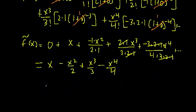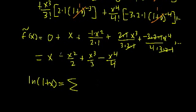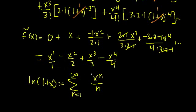We can rewrite this in series notation, but we have to be slightly careful. We have x to the n over n, since both the exponent and denominator increase by 1 each term. However, we can't start at n equals 0 — we start at n equals 1. So the sum runs from n equals 1 to infinity of x to the n over n. We also include the alternating sign factor: times negative 1 to the n plus 1. When n equals 1, that gives negative 1 squared which is positive, then it flips back and forth. That is our Maclaurin series expansion for ln of 1 plus x.